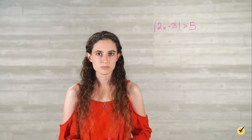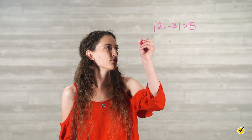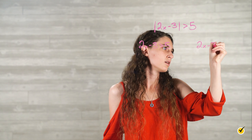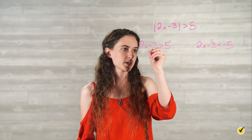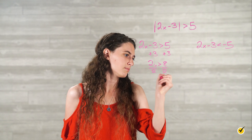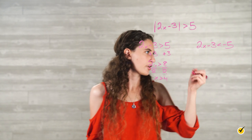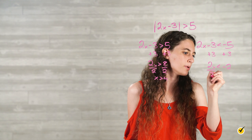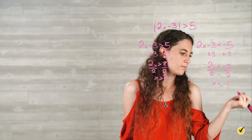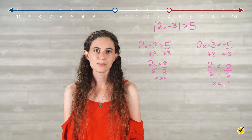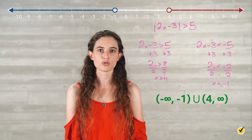Let's take a look. First, rewrite the inequality as two inequalities without absolute value bars, then isolate the variable x. We have 2x minus 3 is greater than 5, and 2x minus 3 is less than negative 5. Adding 3 to both sides: 2x is greater than 8, divide by 2, so x is greater than 4. For the second inequality, adding 3 to both sides gives 2x is less than negative 2, divide by 2, so x is less than negative 1. Now we can graph the solution set for x is greater than 4 or x is less than negative 1, with parentheses indicating open circles not part of the solution set.